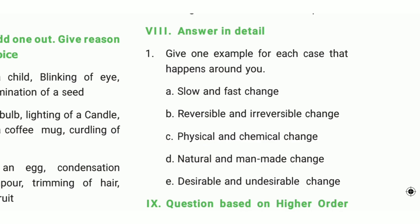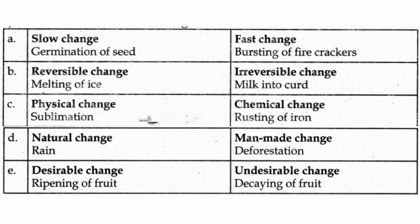Answer in detail. First question: give one example for each type of change that happens around you. Slow change: germination of seed. Fast change: bursting of firecrackers. Reversible change: melting of ice. Irreversible change: milk turning into curd. Physical change: sublimation. Chemical change: rusting of iron. Natural change: rain. Man-made change: deforestation. Desirable change: ripening of fruit. Undesirable change: decaying of fruit.